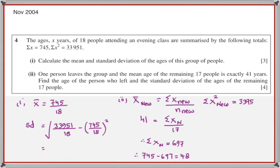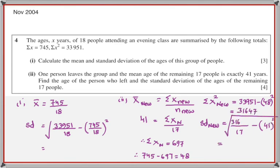What about Σx²? You squared each individual value and added them up. If a person leaves the group, you subtract the square of their age — not just their age. Therefore, find the new Σx², and using the new Σx² and the new mean, calculate the new standard deviation for the remaining group of 17 people.